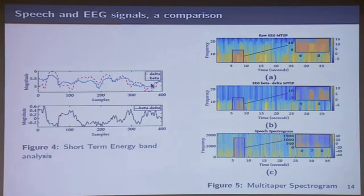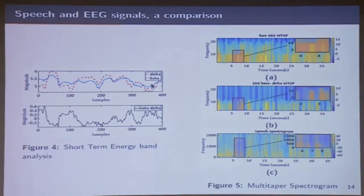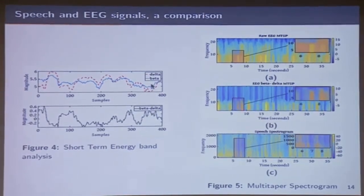This is how speech looks like — a spectrogram is a time-dependent spectrum, frequency as a function of time, which is what we use in speech recognition and so on. We said we would like to use similar models for EEG to detect different kinds of sounds and start seeing that in the beta-minus-delta.